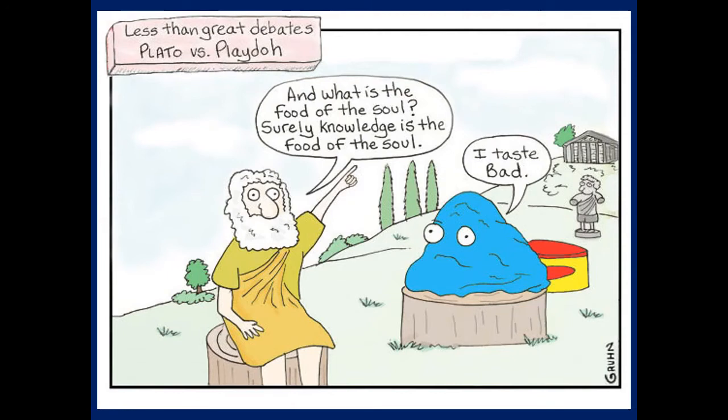Plato versus Plato — a less-than-great debate. The Plato character in the Agora is talking, and there's a statue with no arms listening. Plato on the left is talking about knowledge being food of the soul — the idea that if we have knowledge and wisdom of what the truth is, what life is, we can achieve this good life, this eudaimonia. We'll get to that with the Allegory of the Cave.